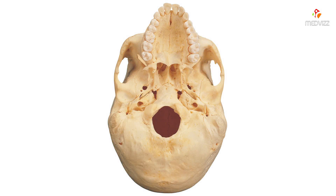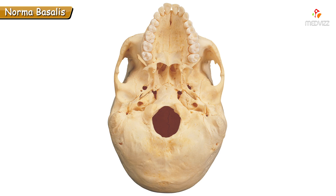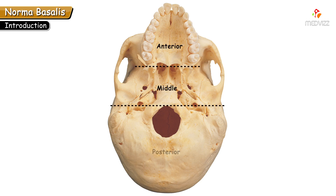Welcome back to osteology classes. Today we will learn about Norma Basalis. Observation of the skull from the inferior aspect without mandible is Norma Basalis. To learn this in an easier way, we can divide it into three parts: anterior, middle, and posterior.